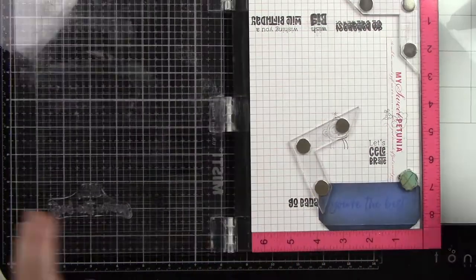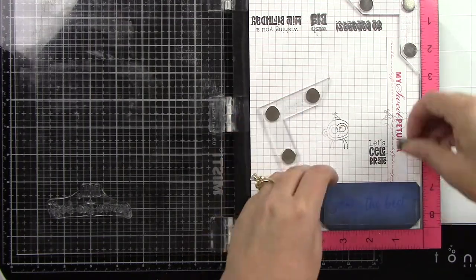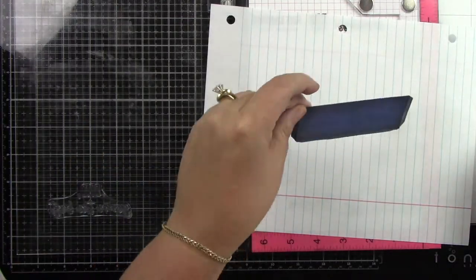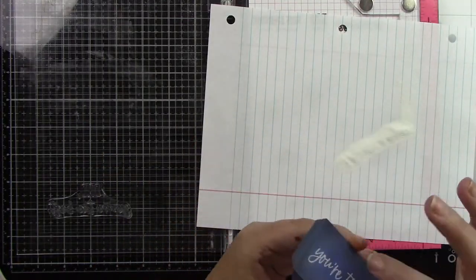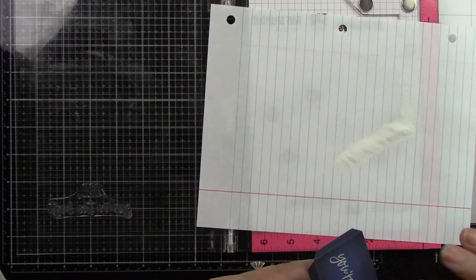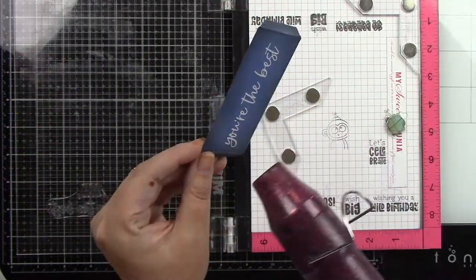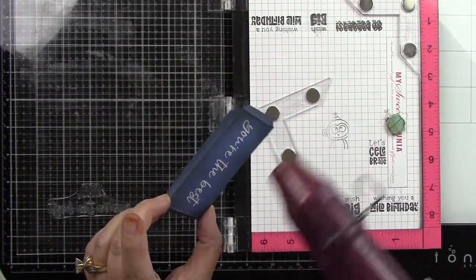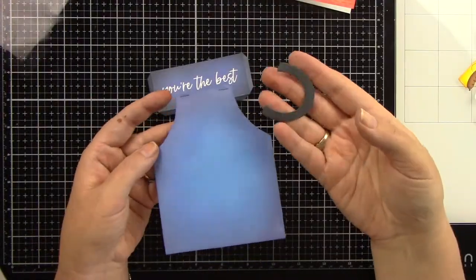I'm going to remove my mask, stamp it down on my image, and then come in with some white embossing powder and heat that through until it's melted. Make sure that your inked background is nice and dry before you try to apply embossing powder.